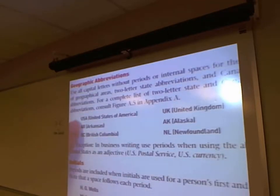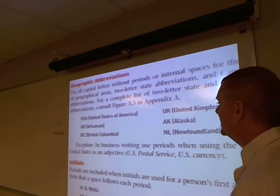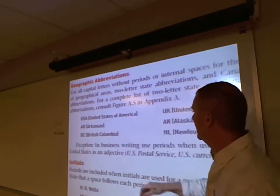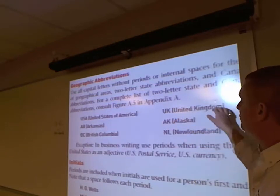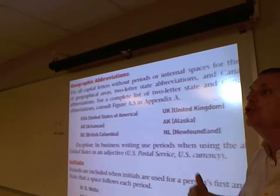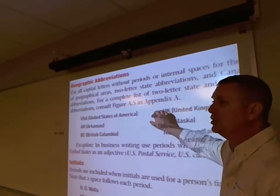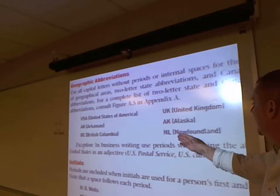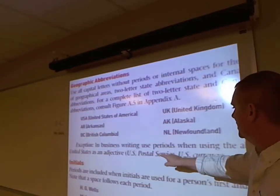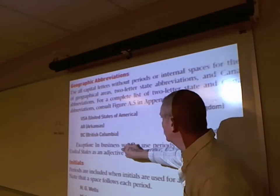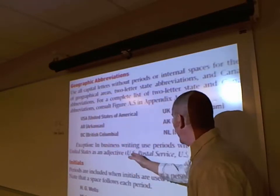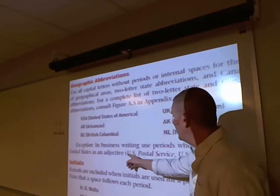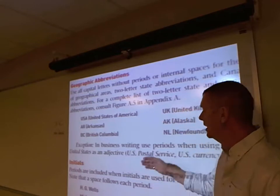The exception: if you put 'United States' as an adjective before a noun, you can put capital U period, capital S period, space — as in 'U.S. Postal Service.' Same with U.S. currency: U period, S period, space, currency. For initials, it's H period, space, G period, space, Wells. We often put initials together without spaces, but that's not correct — separate each initial with a space, representing a full name.